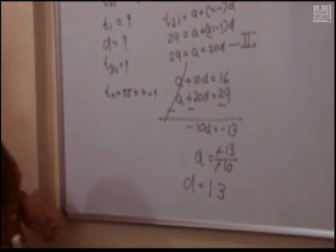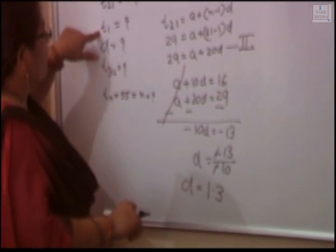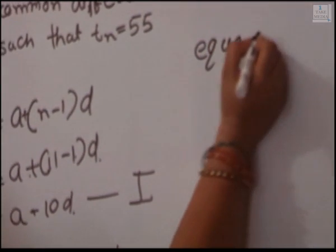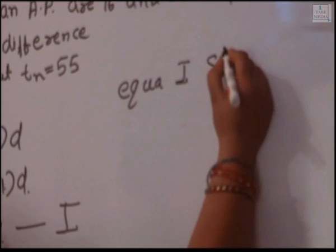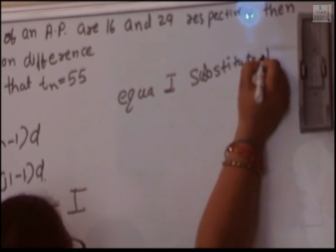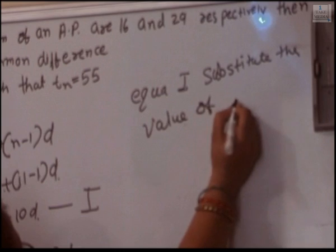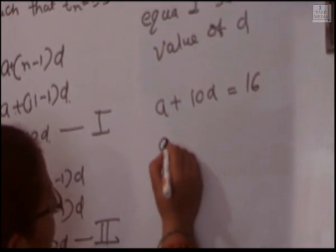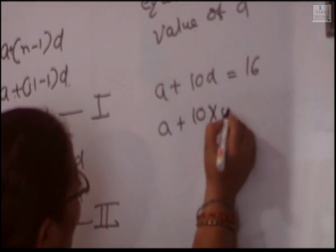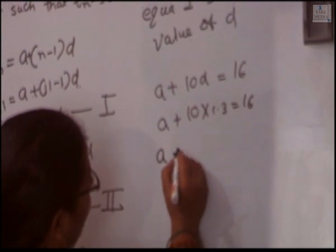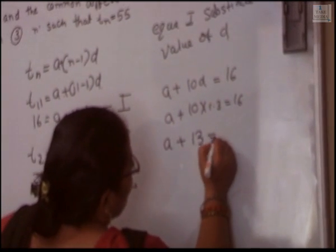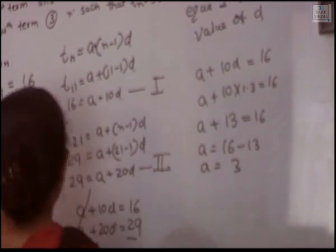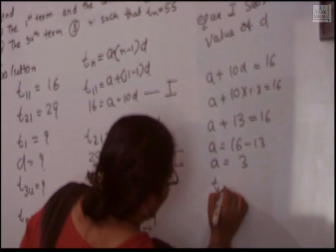The common difference is 1.3. Now we have to calculate T1, which is A. Substituting D into equation 1: A plus 10 into 1.3 equal to 16. A plus 13 equal to 16. So A equal to 16 minus 13, giving A equal to 3. Therefore T1 equal to 3.